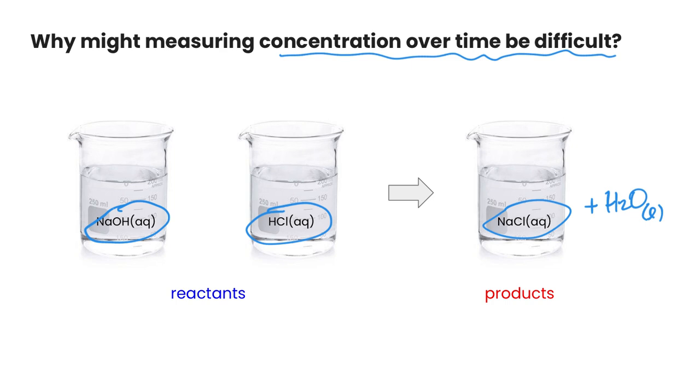But there's no actual appearance or change that's happening here. You basically just see clear solution all throughout. So how do we actually measure the concentrations and what kind of observable changes can we measure directly during a chemical reaction?